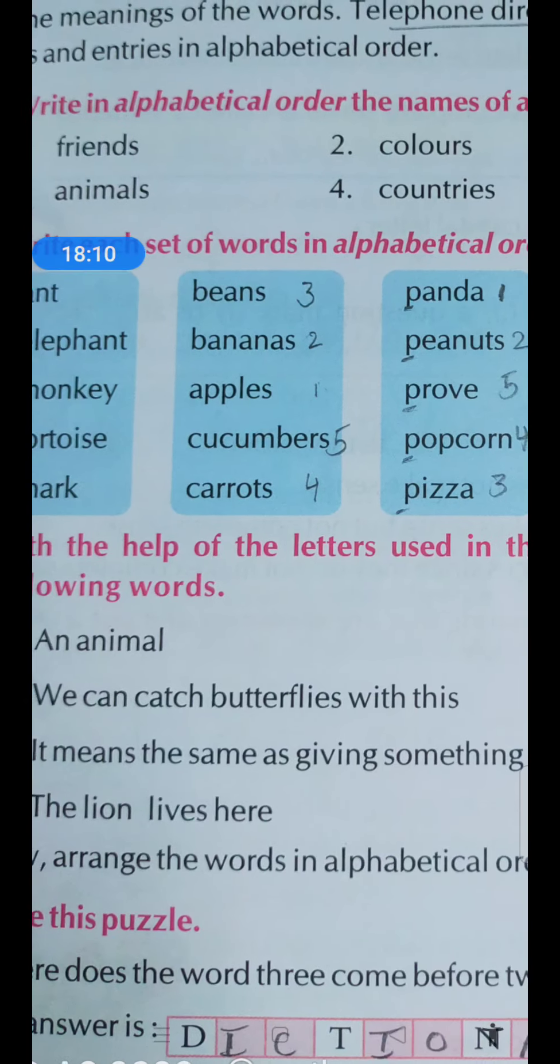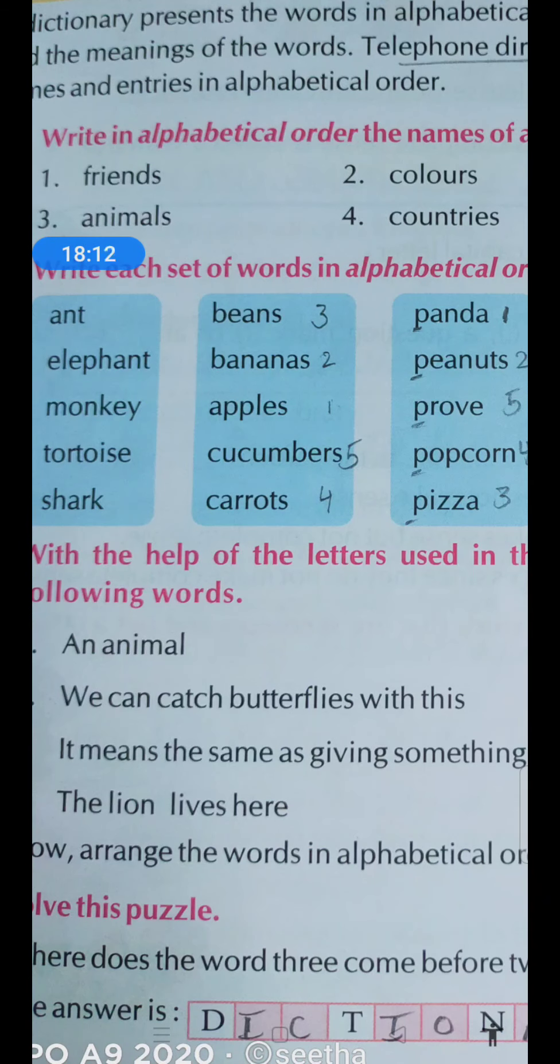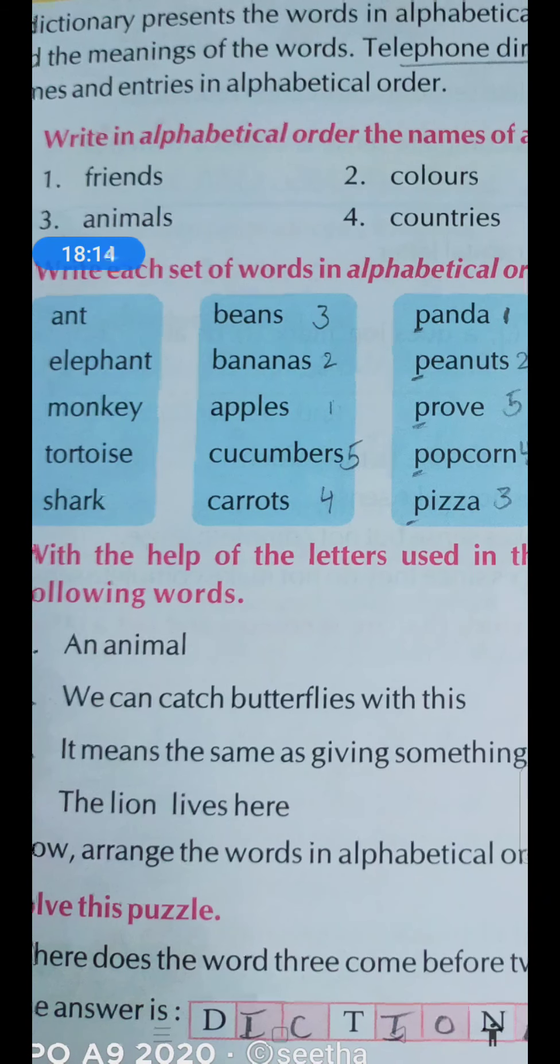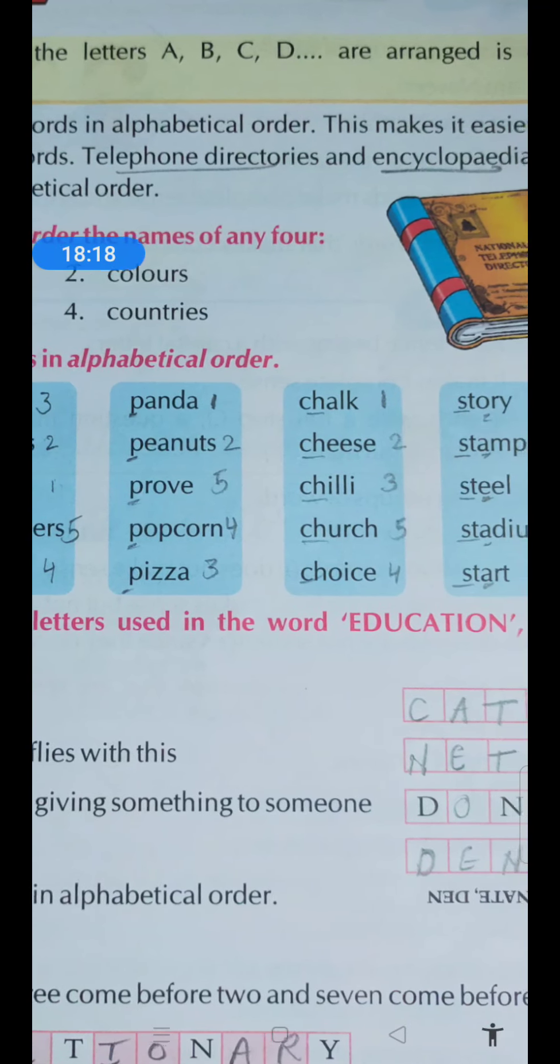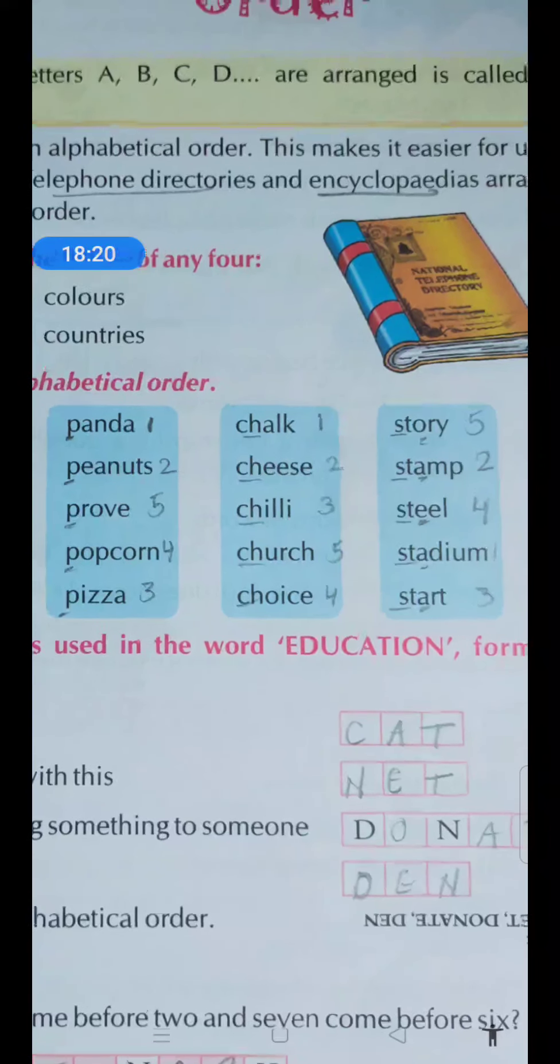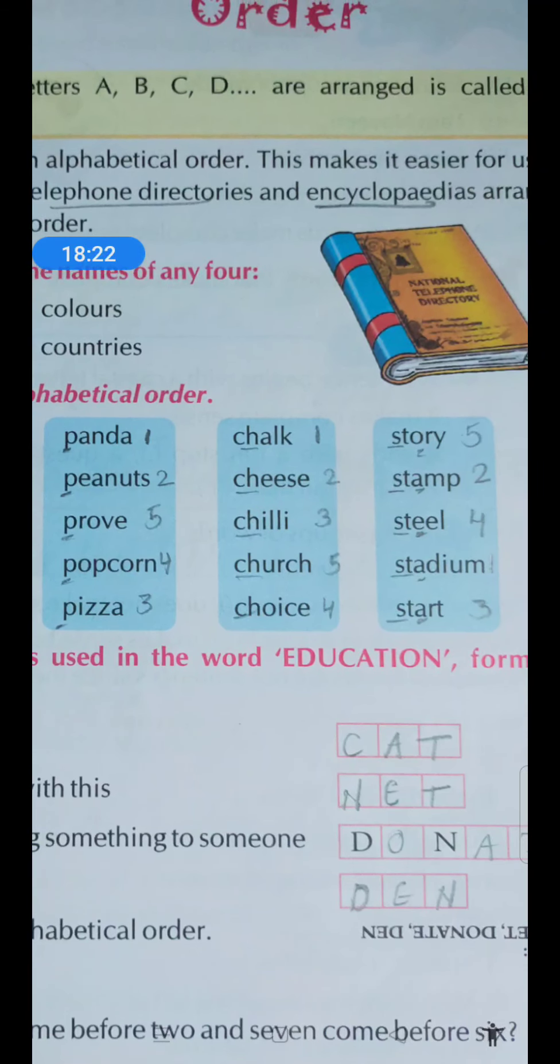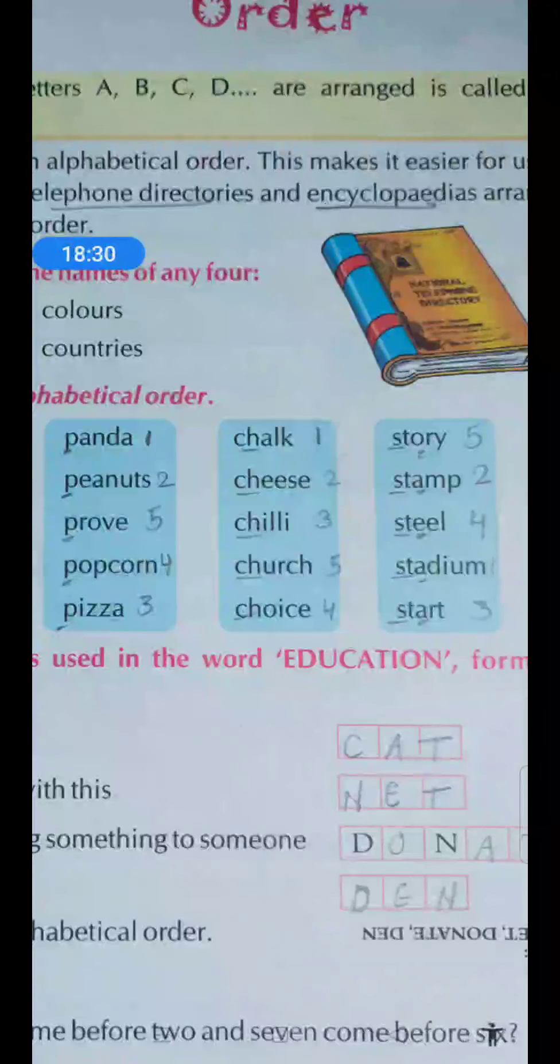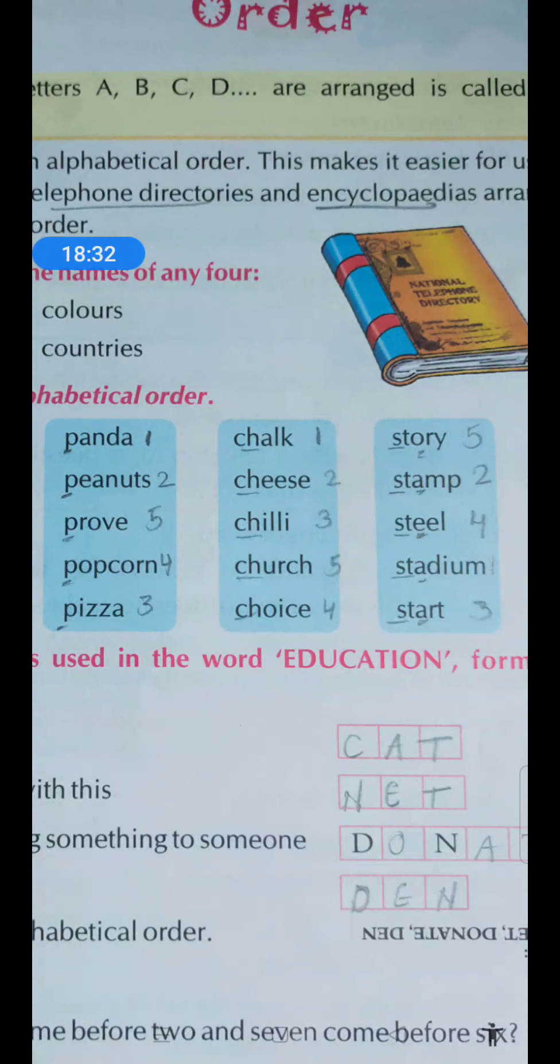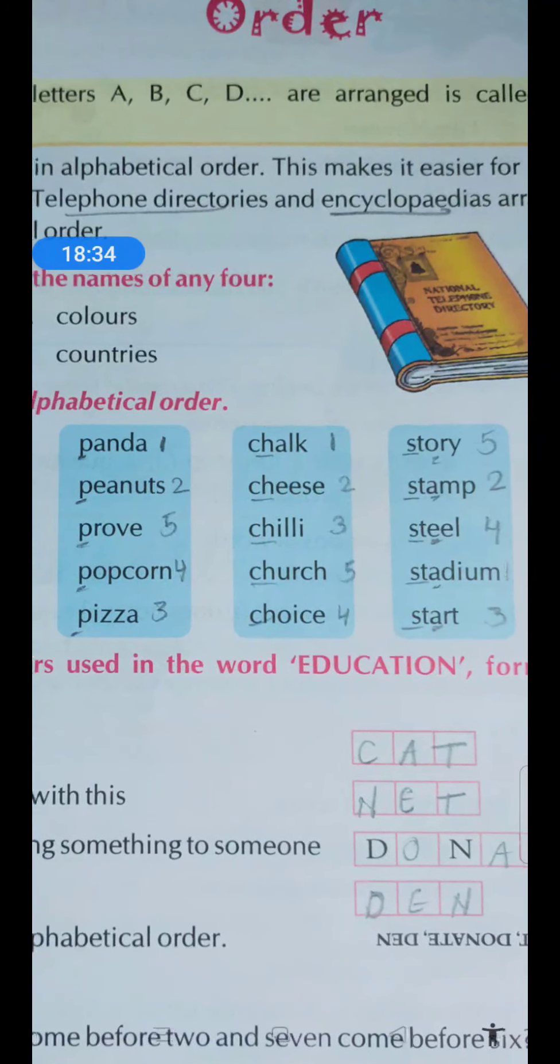The second one: we can catch butterflies with this. How can we catch butterflies? By using what? Yes, obviously by using net. N-E-T. These three letters are there in education. Although they are placed at different positions it doesn't matter, but we can find these letters in this word. So definitely we can write net over here.